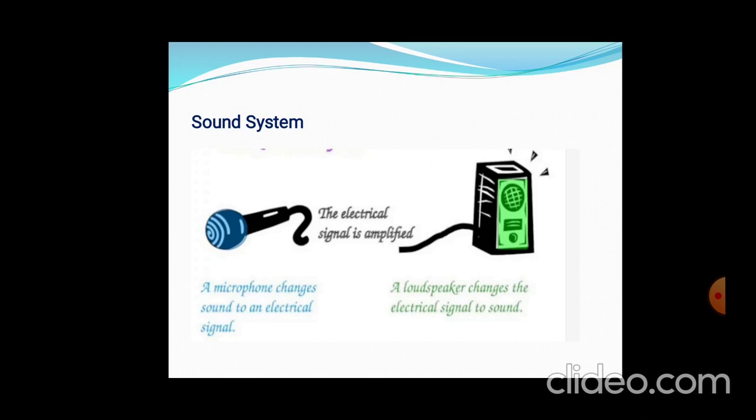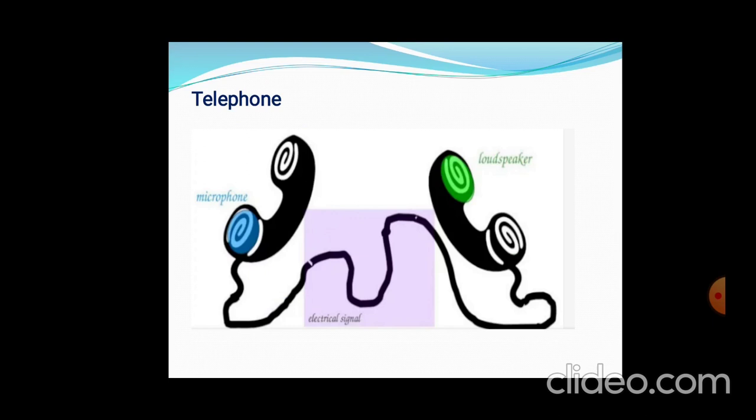In between the microphone and loudspeaker, the electrical signal is amplified — meaning the intensity of the sound is increased. This amplified electrical signal passes through the channel, which we call the microphone-loudspeaker system.